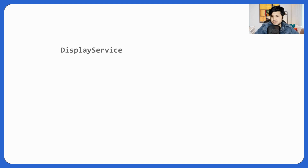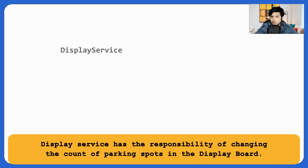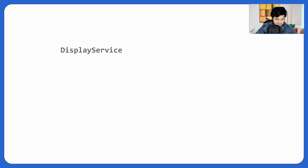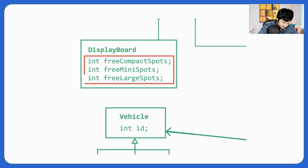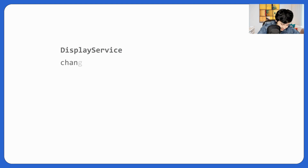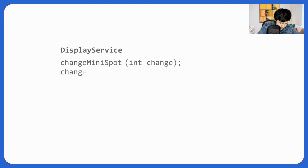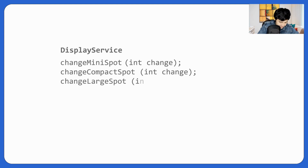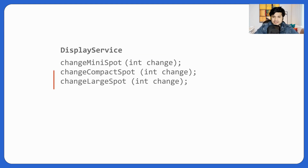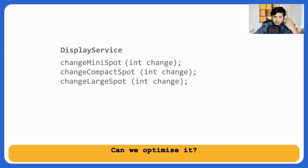Now for the display service. Its responsibility is changing the count of parking spots on the display board. Since there are three types of parking spots, we'd have three data members — free mini spots, free compact spots, and free large spots — and three separate functions: `changeMiniSpots`, `changeCompactSpot`, and `changeLargeSpot`, each taking an integer change (+1 for vehicle entry, -1 for exit). But we're doing the same job in all three functions — too much redundant code.